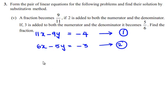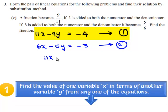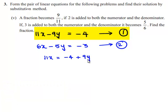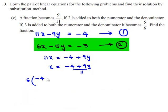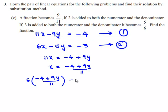Now the first equation can be written as 11x is equal to minus 4 plus 9y, that is x is equal to minus 4 plus 9y divided by 11. Let us substitute the value of x in equation number 2: 6 times of (minus 4 plus 9y) divided by 11, minus 5y, is equal to minus 3.